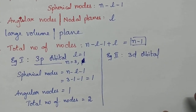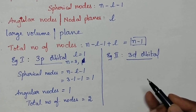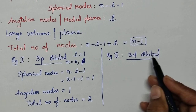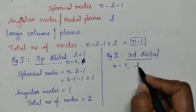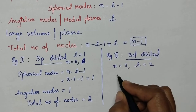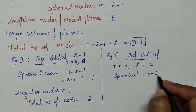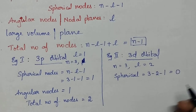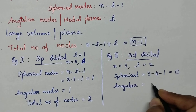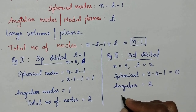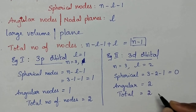One more example: find the nodes for 3d orbital. For 3d, n=3 and L=2. Spherical nodes = n-l-1 = 3-2-1 = 0. Angular nodes = L = 2. Total nodes = n-1 = 2.